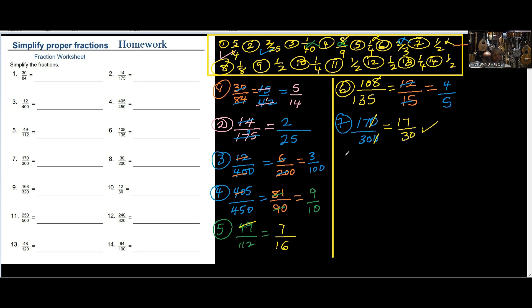Number 8 — we have 30 over 200. Again you can cancel out zeros: zero cancels zero, then you have 3 over 20, which you cannot reduce further.